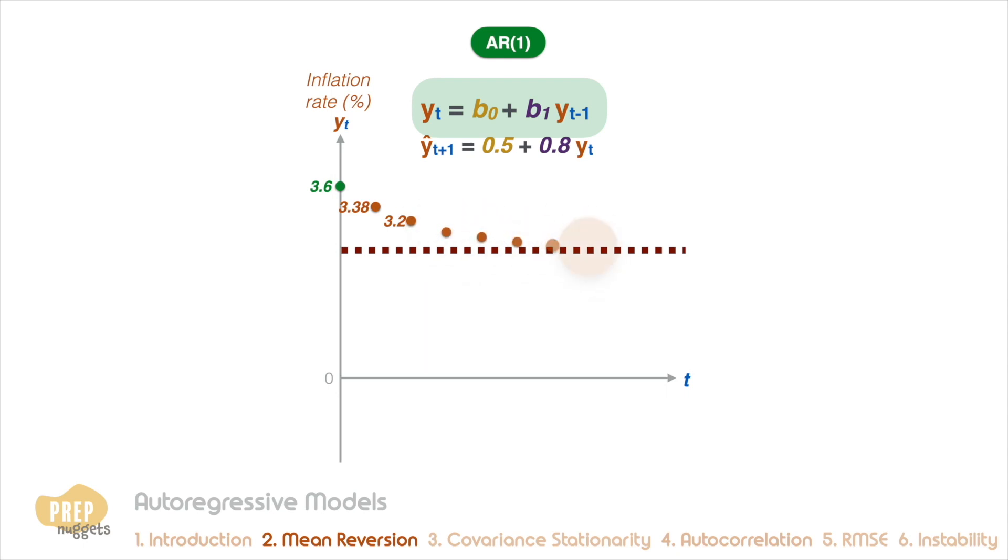If we continue forecasting for many periods ahead, you'll find that the forecast converges to this level. In such a case, we say that the time series exhibits mean reversion and this level is called the mean reverting level.